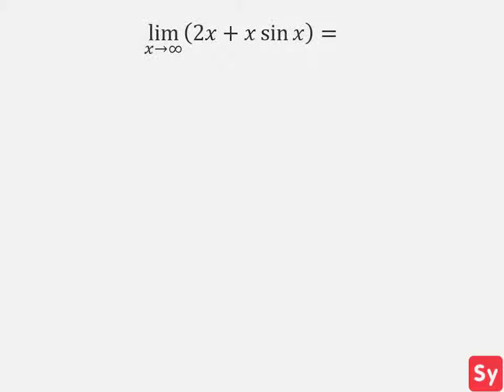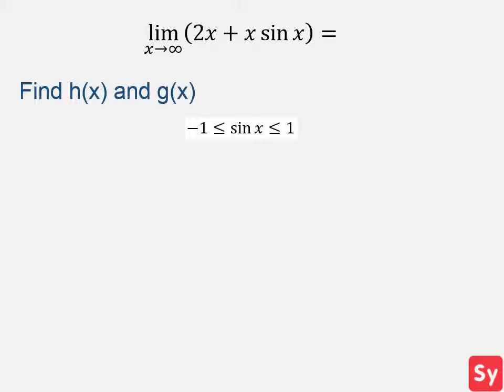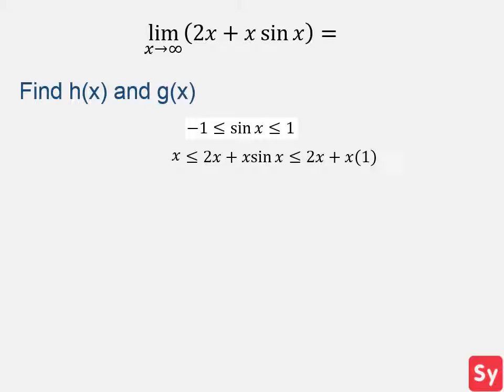One more example. We have the limit of 2x plus x times sine of x as x approaches infinity. First, we have to find h and g. We know sine of x is between negative 1 and 1, so we'll use this knowledge. This time we'll substitute in negative 1 and 1 for sine of x. So we have 2x plus x times negative 1 is less than or equal to 2x plus x times sine of x is less than or equal to 2x plus x times 1. We can simplify g of x to x and we can simplify h of x to 3x.